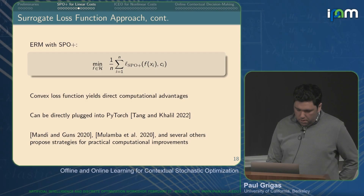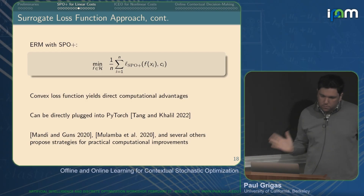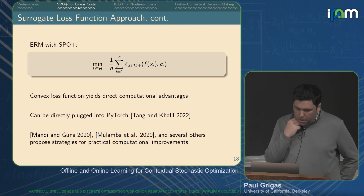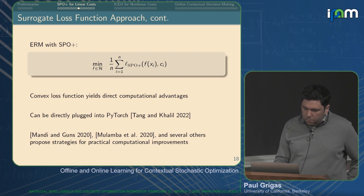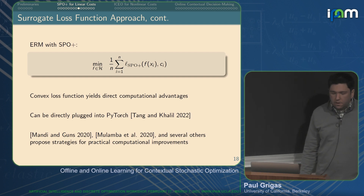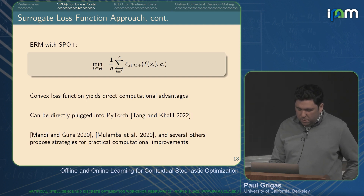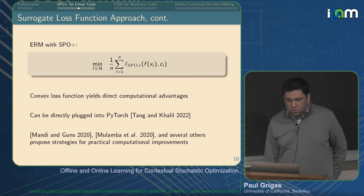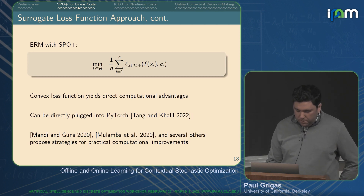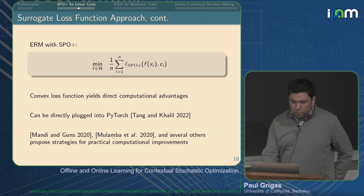We can work with SPO+ instead. Convexity is the most important computational benefit — we can solve it with gradient methods, stochastic gradient methods. It can be directly plugged into PyTorch; Elias has done nice work developing a package for that. There are also strategies developed by Tios and collaborators for other practical computational improvements.